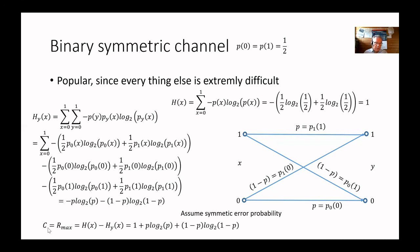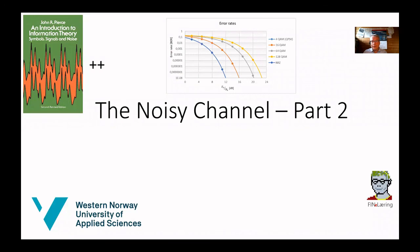And then we can calculate C, which is R max — the entropy H(x) minus the conditional entropy — and we get: 1 plus p log base 2 of p plus (1 minus p) log base 2 of (1 minus p). That finishes part one of the noisy communication channel. Next time we are going to look at how we can get graphs like this for the binary symmetric channel, and we are also going to look at some other channels. Bye for now.